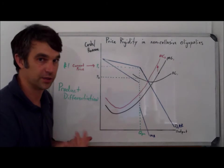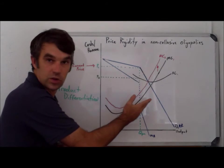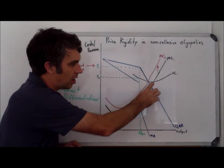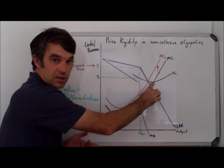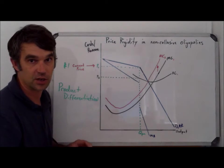However, average costs will have changed. Remember, marginal cost has to intersect the lowest point of AC. Well, we already said the lowest point of AC1 is here, therefore that can't be right. So we need a new average cost curve as well.